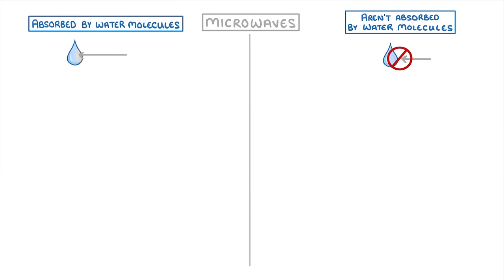If we start with microwaves, we can loosely split them into two different groups: those that aren't absorbed by water molecules, and those that are absorbed by water molecules.